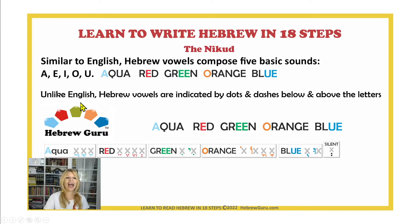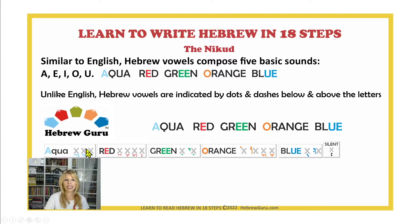Now, unlike English, Hebrew vowels are indicated by dots and dashes below and above the letters. If you look here, you can see the X represents a Hebrew letter — any Hebrew letter — and then you can see where the vowel is positioned. The Hebrew Guru logo represents the five Hebrew vowels.